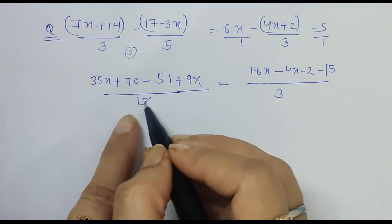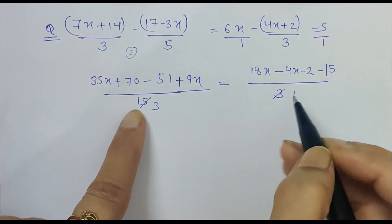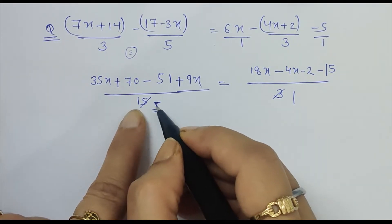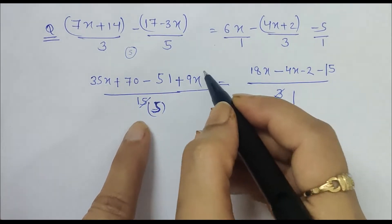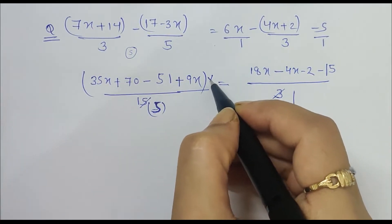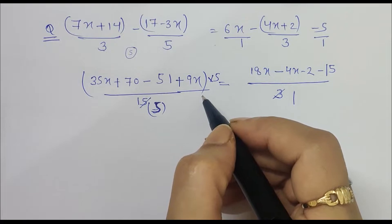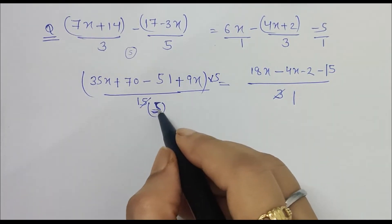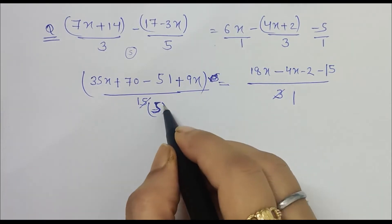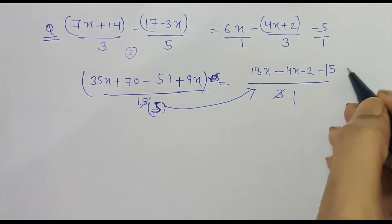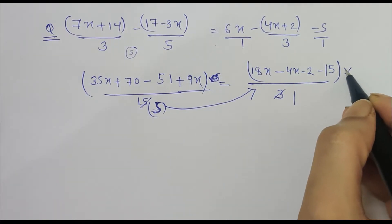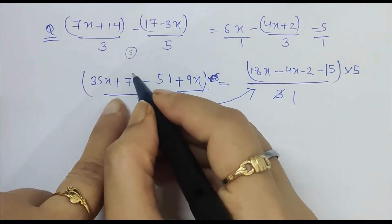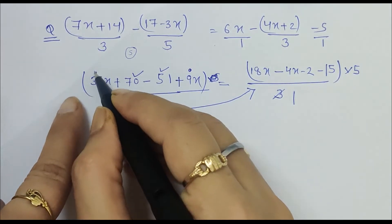Now this 15 gets cancelled by this 3. And this 5 can be removed by multiplying it throughout by 5. So for removing this 5, what we have to do is shift this to the right-hand side, so it will get multiplied here, which will be done in the next step.